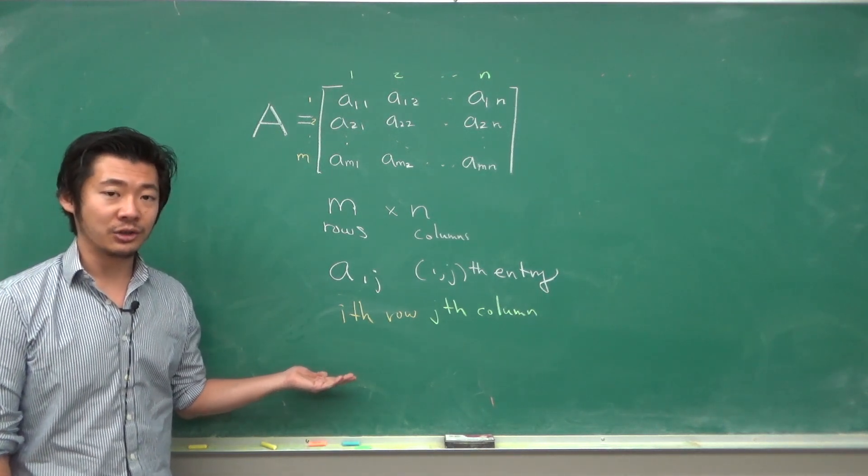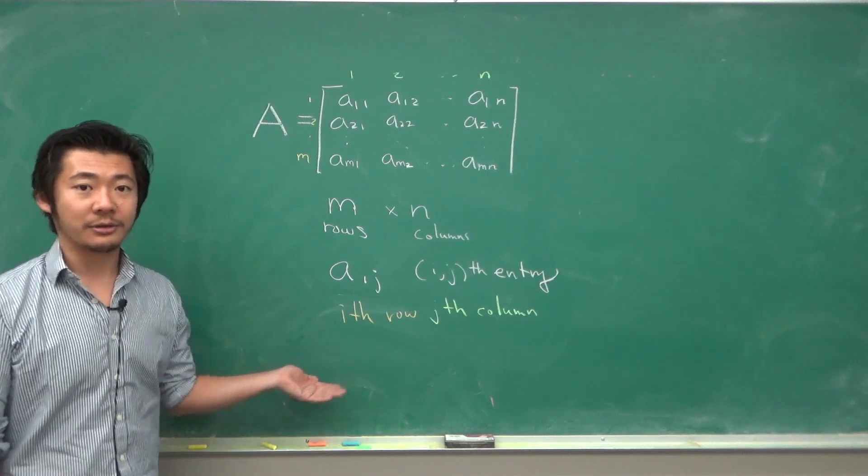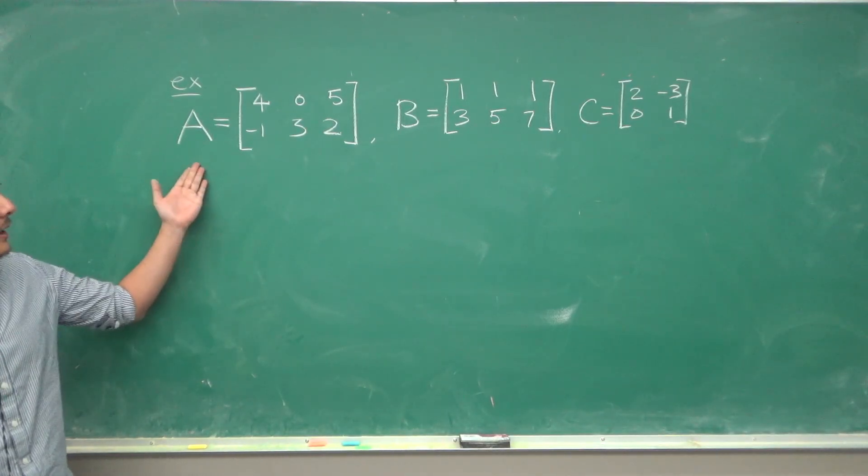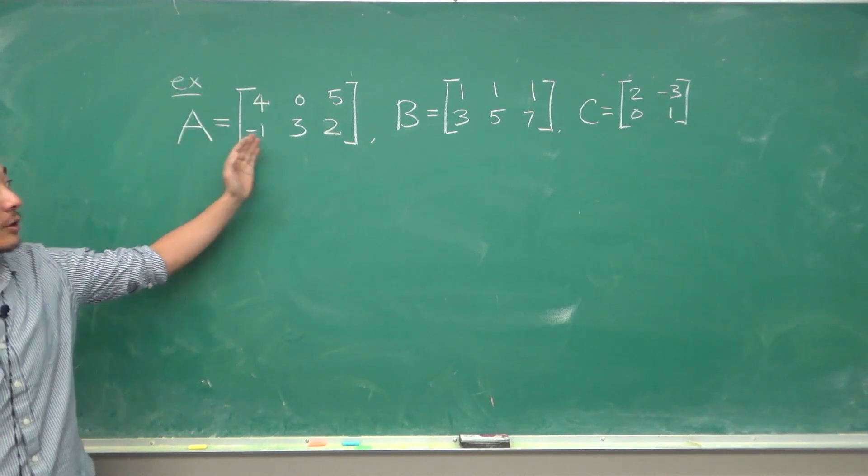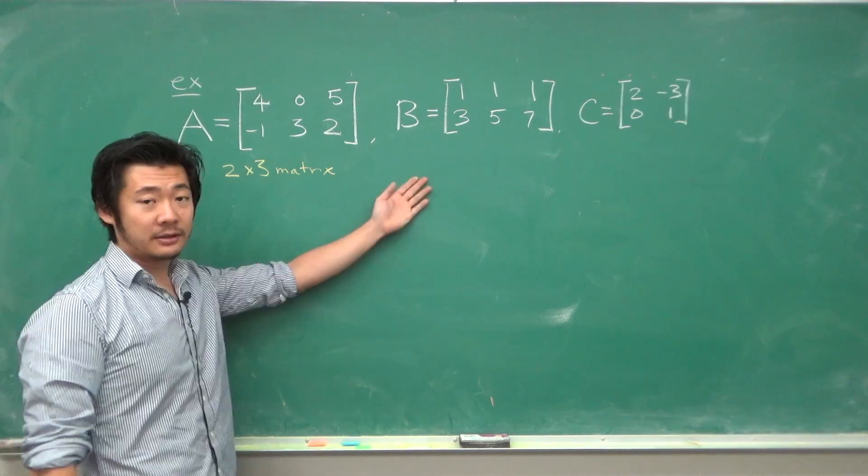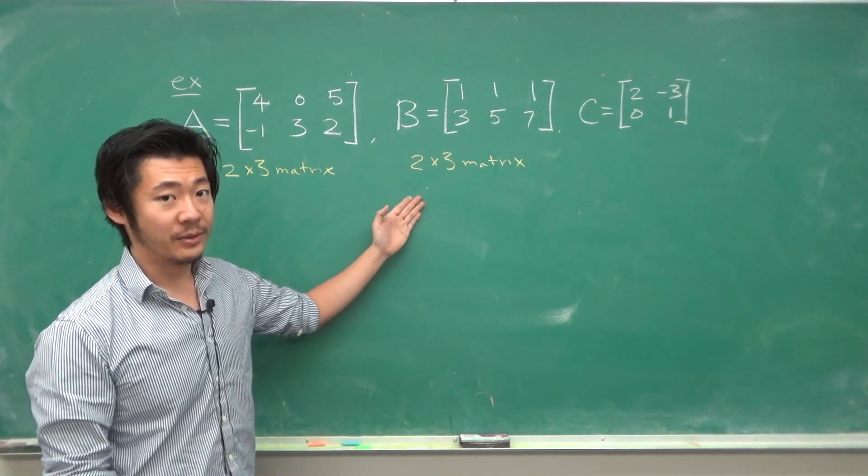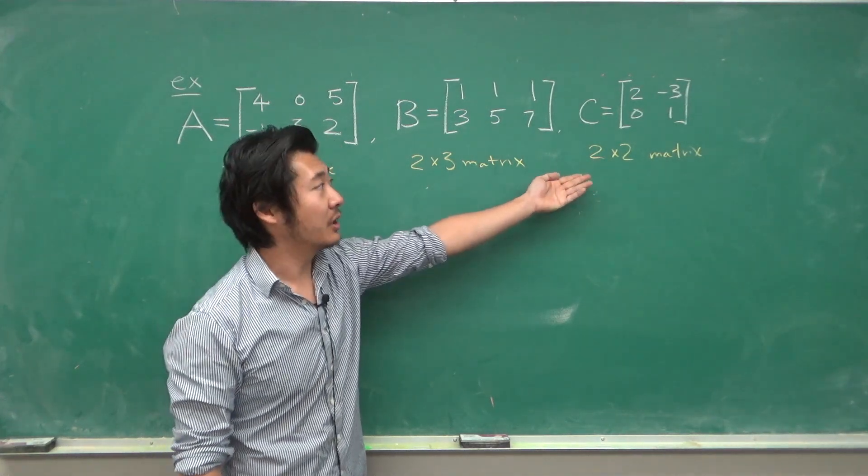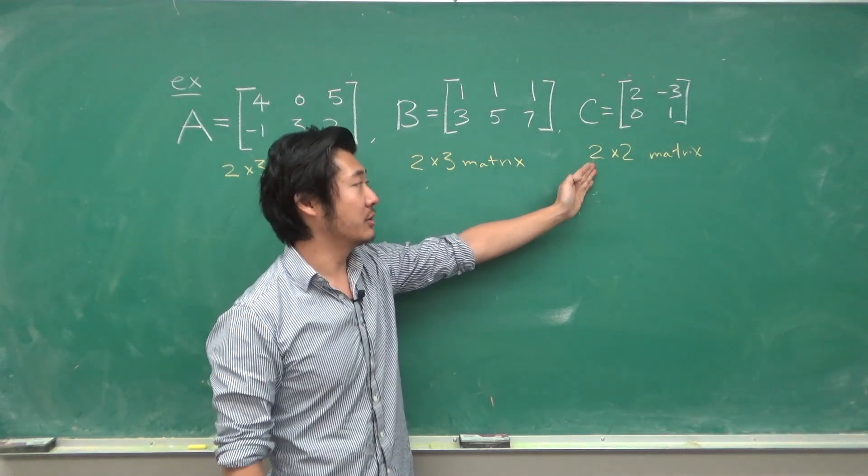Let's consider these examples of matrices. A is a 2 by 3 matrix because it has 2 rows and 3 columns, same as B. B is a 2 by 3 matrix and C is a 2 by 2 matrix. Sometimes we call these types of matrices, where the rows and columns are equal, a square matrix.